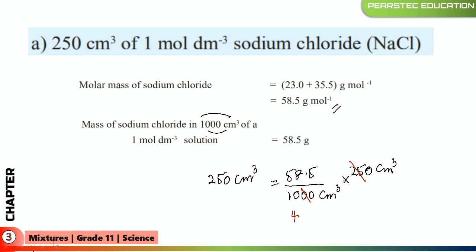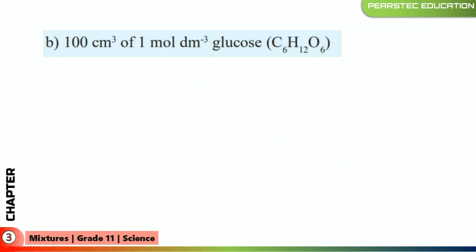That is 58.5 divided by 4, which gives 14.62 grams. To prepare 250 cubic centimeters of a 1 mol per cubic decimeter sodium chloride solution, you need 14.62 grams of sodium chloride.